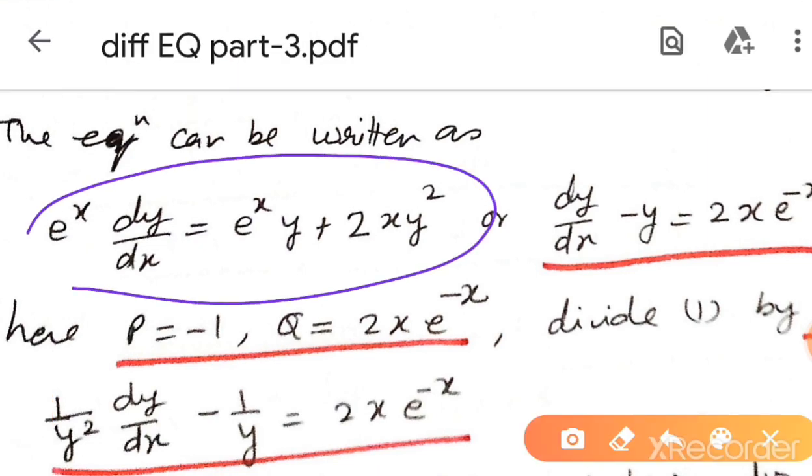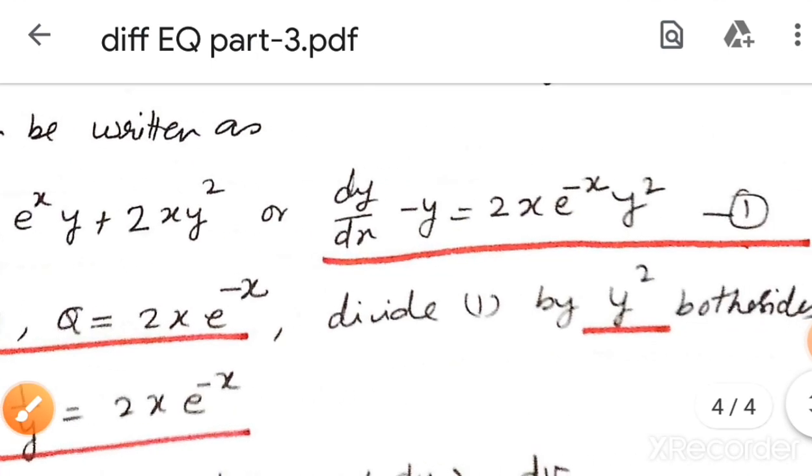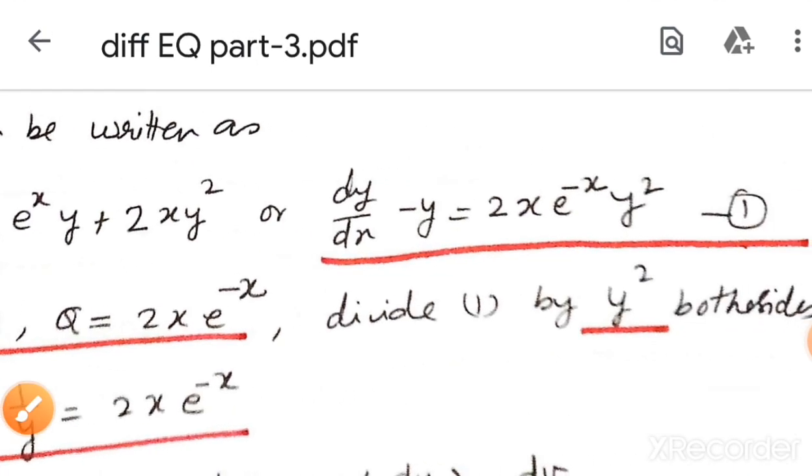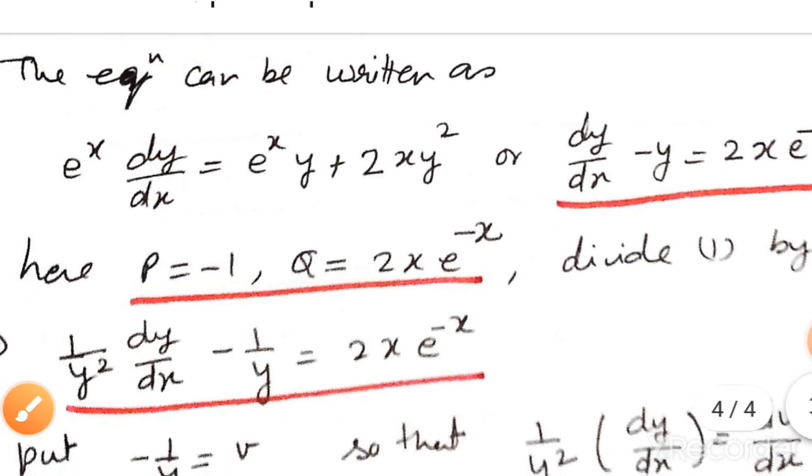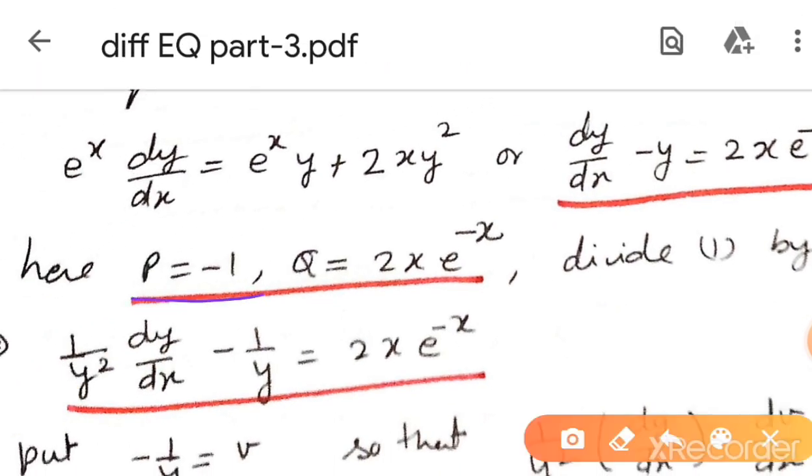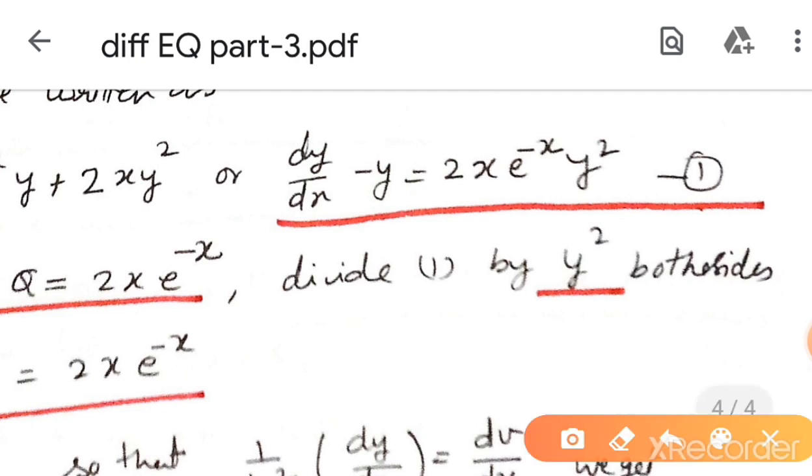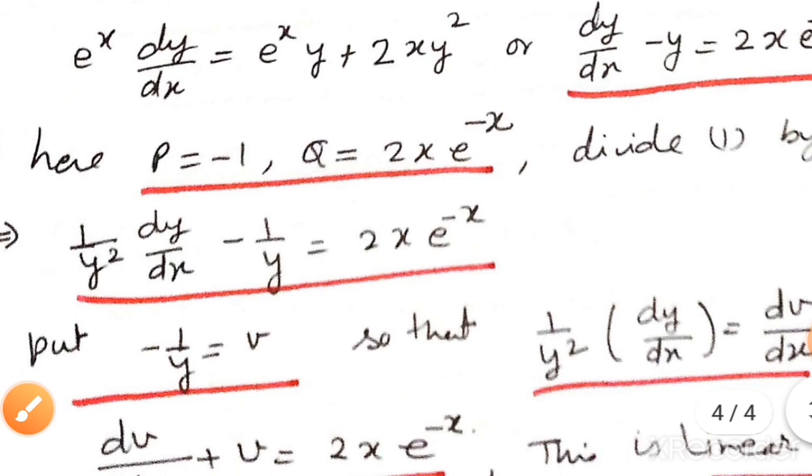e to the power x dy by dx, coefficient should be 1, minus y. Here p value is minus 1, q is 2x, and we have y square. Divide both sides of this equation by y square and we get this equation.